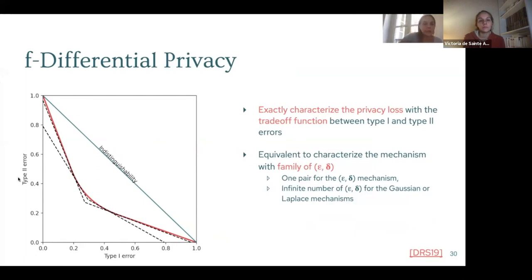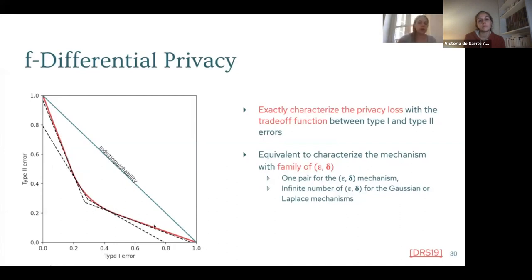For the Laplace mechanism, the exact trade-off function is shown here in red. I've also plotted two of the epsilon-delta trade-off functions, and we can see that these epsilon-delta trade-off functions are tangent lines of the exact Laplace trade-off function — so they are always smaller than the exact trade-off function.